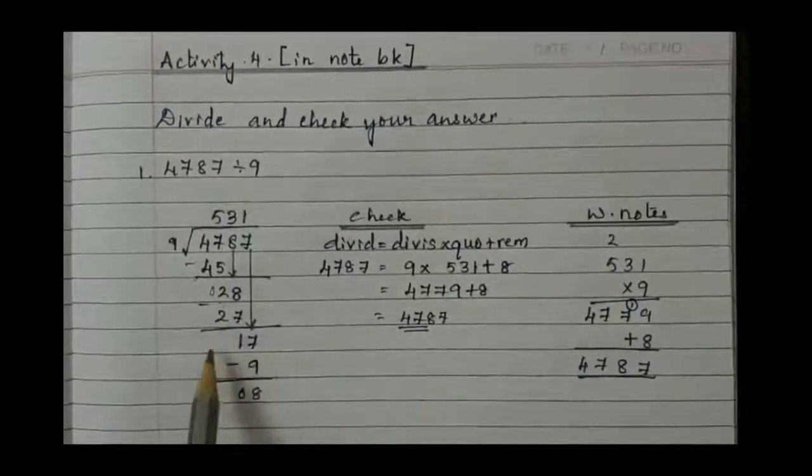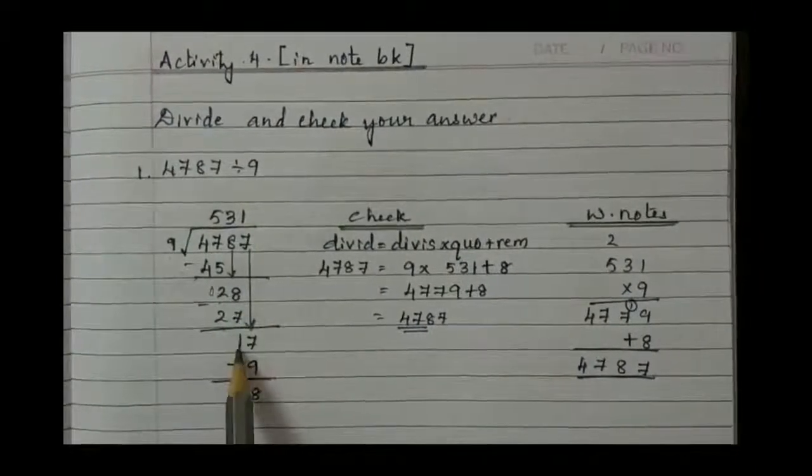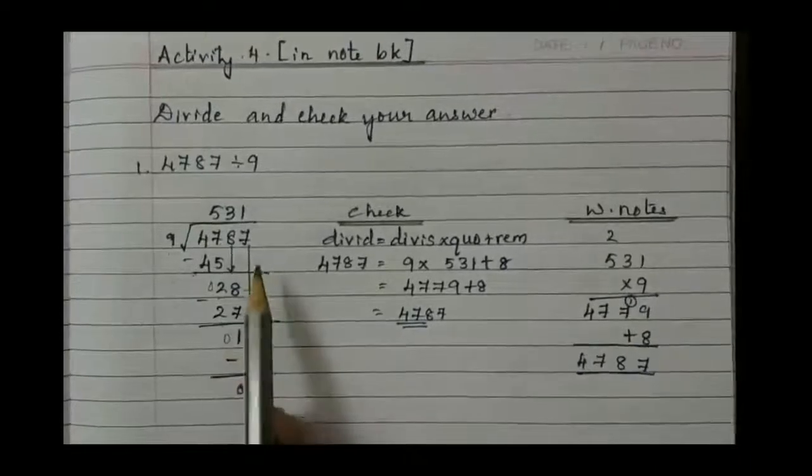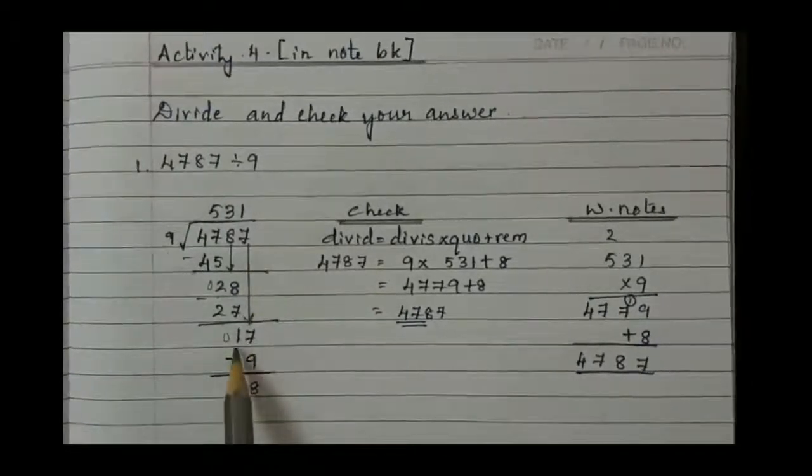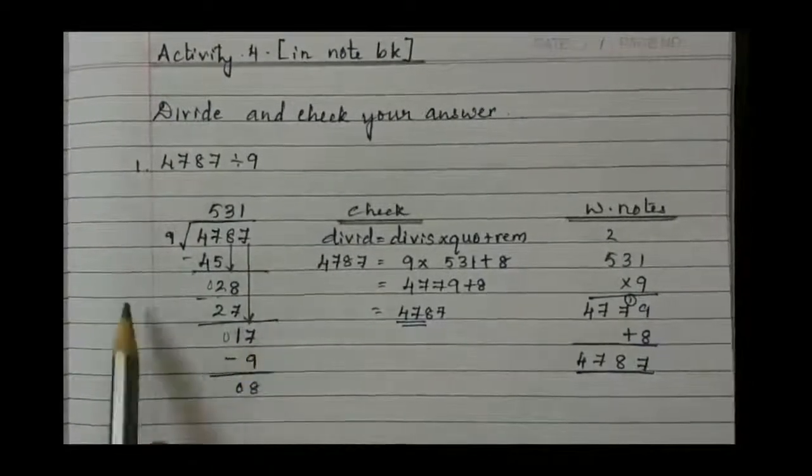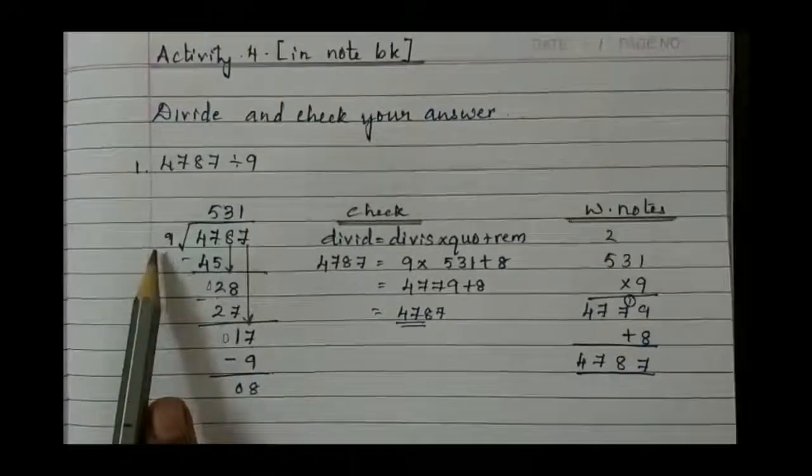After this subtract: 8 minus 7 is 1, 2 minus 2 is 0. Later bring 7 down, so it becomes 17. 9 how many is 17?